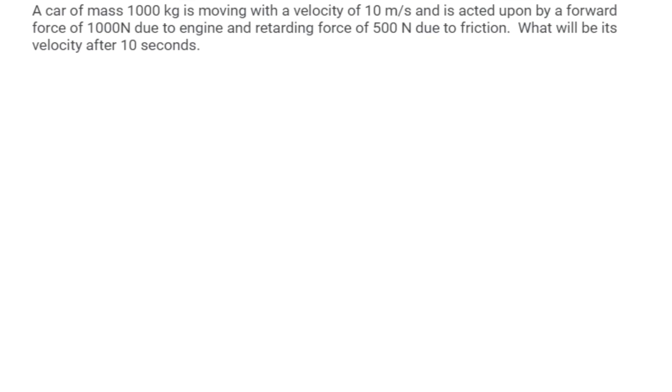A car of mass 1000 kg is moving with a velocity of 10 m per second and is acted upon by a force of 1000 N due to the engine and a retarding force of 500 N due to friction. What will be its velocity after 10 seconds?